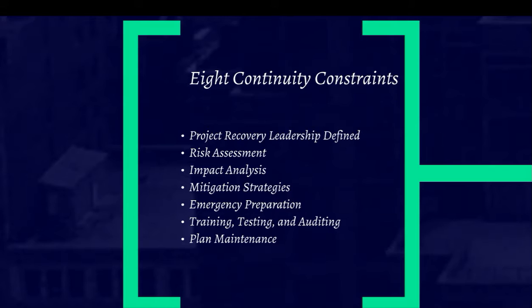Chernobyl is another great example — they're now building a sarcophagus around the failing infrastructure. What happens when it fails? Do we build a bigger one? These are all parts of emergency preparation planning. How do we get people out of a building that's on fire? Do we take equipment or leave it? What's the cost of a human life versus the cost of a computer? What's the cost of not backing up data to a cloud or third-party vendor? And how do you get that training to your employees, test their ability, and audit to make sure everything's being conducted correctly?